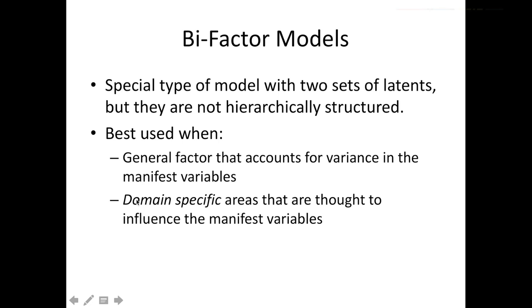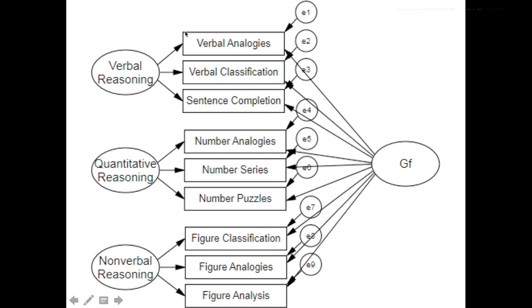So bifactor model is a special type of model with two sets of latents. So this is not two bubbles. This is two sets, distinct sides. But they're not hierarchically structured. In fact, each manifest variable here has two arrows coming into it. So it's almost like cross-listing. It's like having a, in this example, fourth factor that every item should load on. You can also do these as EFAs. Bifactor EFAs sometimes are called Schmid-Liemanns. But the idea is it would first take out all the variance due to a generalized factor. And then see what's left over.